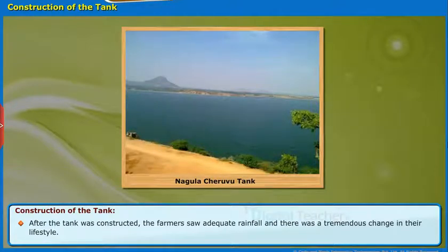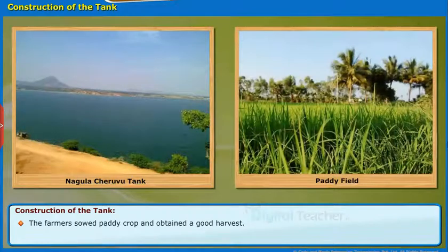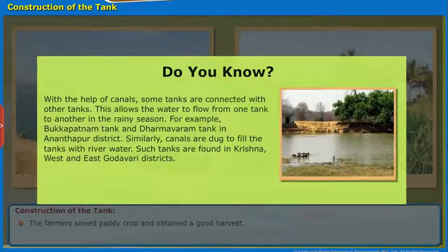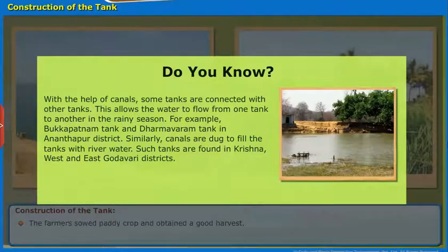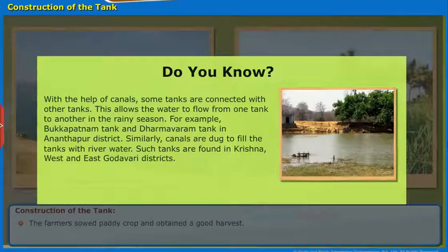The villagers prepared canals. After the tank was constructed, the farmers saw adequate rainfall and there was a tremendous change in their lifestyle. The farmers sowed paddy crop and obtained a good harvest. With the help of canals, some tanks are connected with other tanks, allowing water to flow from one tank to another in the rainy season. For example, Bukkapatnam tank and Dharmavaram tank in Anantapur district. Similarly, canals are dug to fill tanks with river water; such tanks are found in Krishna, West and East Godavari districts.